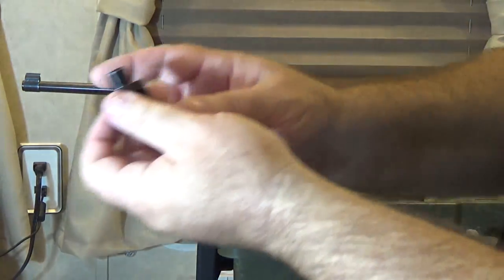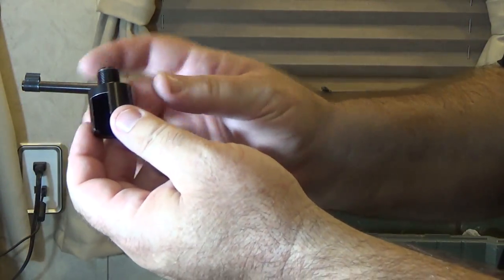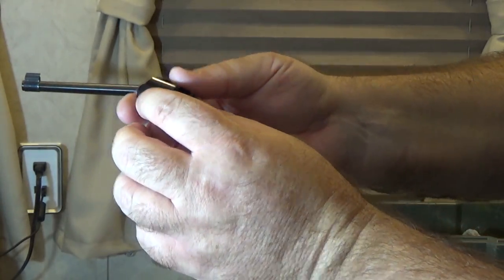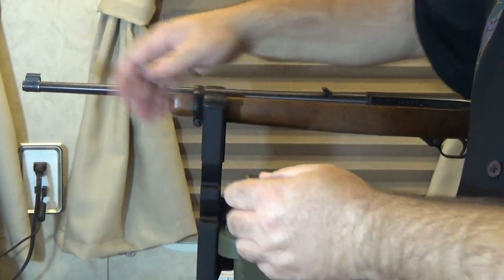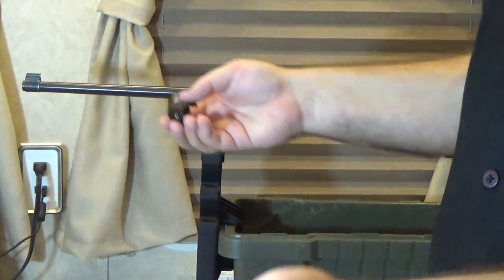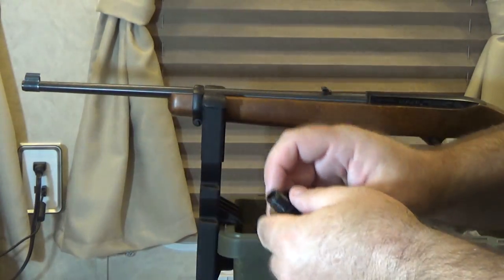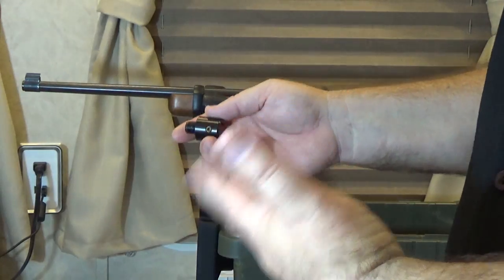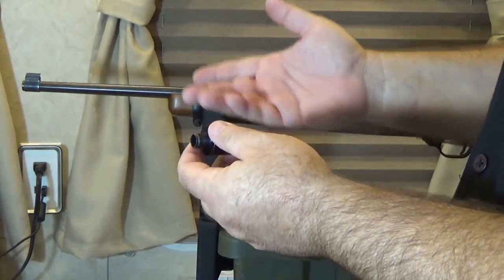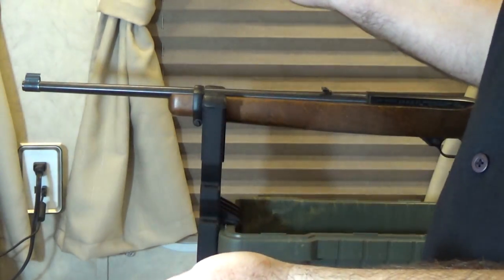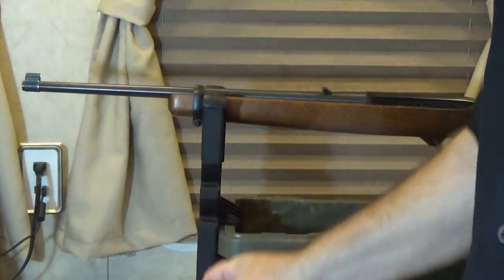Now, the first one we've got right here is a 1.5 x 28 TPI thread. This way, when I put this on to the Ruger, I'll be able to actually use a suppressor. As you know, I own two suppressors. Or I'll be able to put a flash hider or a muzzle, any muzzle device. A muzzle brake, all sorts of things that I can put on there.